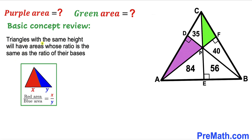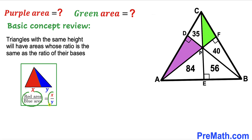Triangles with the same height will have areas whose ratio is the same as the ratio of their bases. Here we have two triangles — the red triangle and the blue triangle. The height of both triangles is the same. The base of the red triangle is x, whereas the base of the blue triangle is y. Then the ratio of their areas is equal to the ratio of their bases.